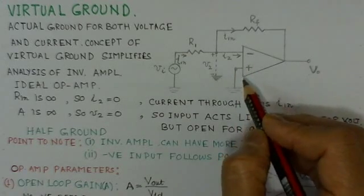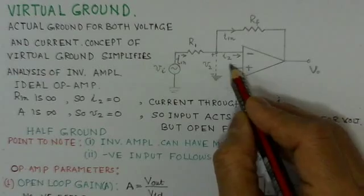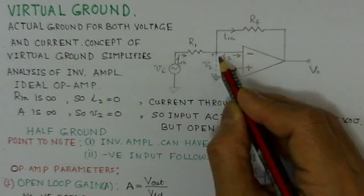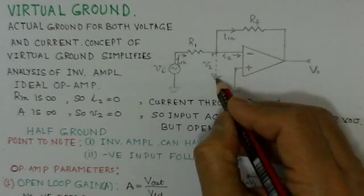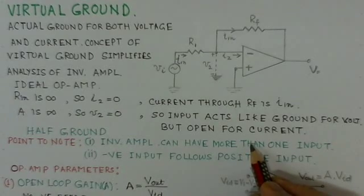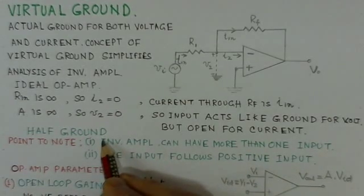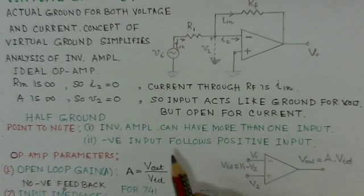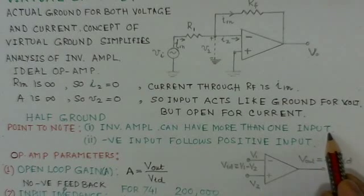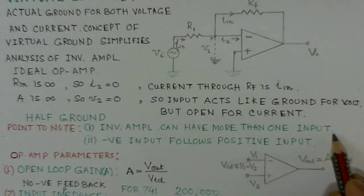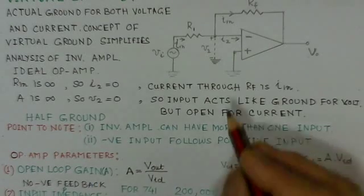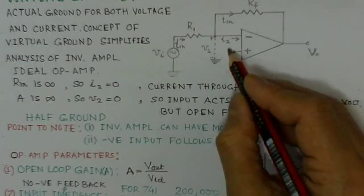At the inverting input, V2 equals zero — it acts like a ground in terms of voltage, but this point cannot sink current, so it is open for current. This is what we call virtual ground, also referred to as a half ground. The advantage is that an inverting amplifier can have more than one input, and because of the virtual ground concept, these inputs will not interfere with each other.